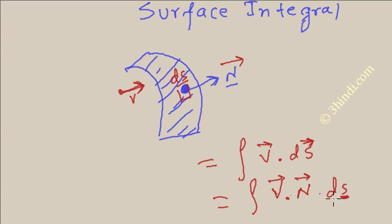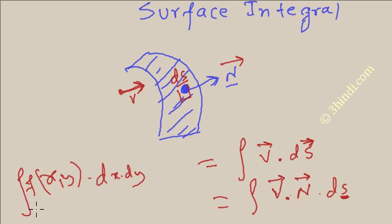Here you can write ds as dx into dy, and you can just multiply this v and n and you will get some function of x, y. And here ds means dx dy, and you integrate it to all the boundaries, you will get the surface integral value.